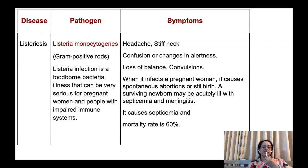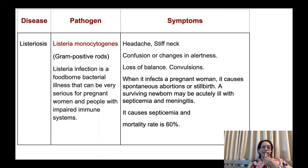Another disease is listeriosis. Listeria monocytogenes is the causative agent — a gram-positive, rod-shaped microorganism causing a foodborne bacterial illness. It may be very serious in pregnant women and in people with an impaired immune system. Symptoms include severe headache, stiff neck, confusion or changes in alertness, loss of balance, and convulsions. When it infects pregnant women, it causes spontaneous abortions or stillbirth. A surviving newborn may be acutely ill with septicemia and meningitis. Mortality rate is very high, up to 60%.